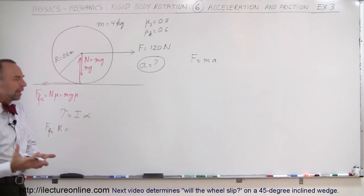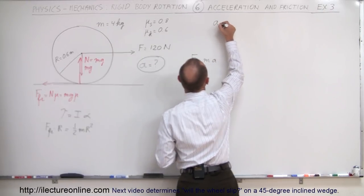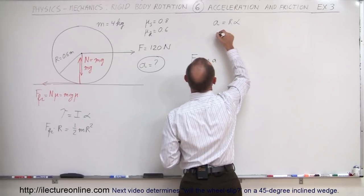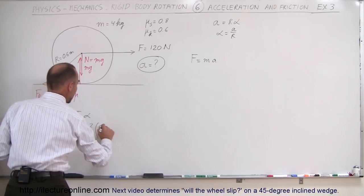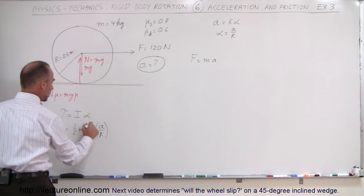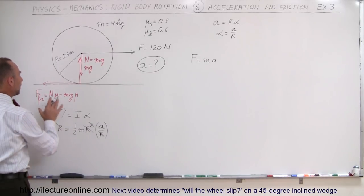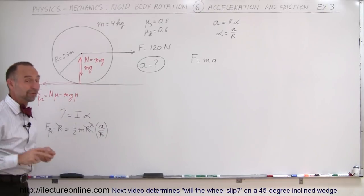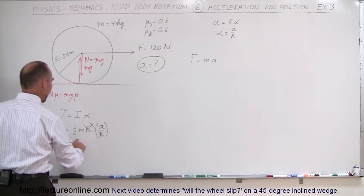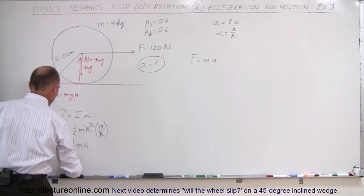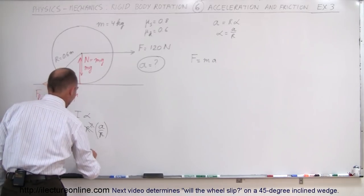That equals the moment of inertia — assuming a solid disk, that's one-half m r squared — times alpha. The angular acceleration alpha equals a divided by r, the translational acceleration divided by the radius. Notice that the r's cancel out, leaving no radius in the equation. The friction force, which is the maximum friction force between the wheel and the tire, equals mg times mu, and we find that the friction force equals one-half the mass times acceleration.